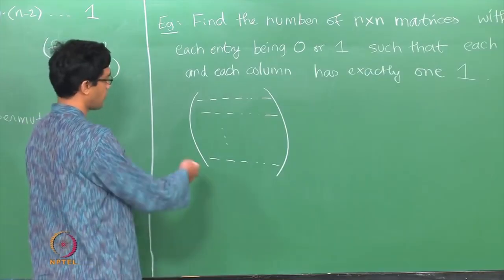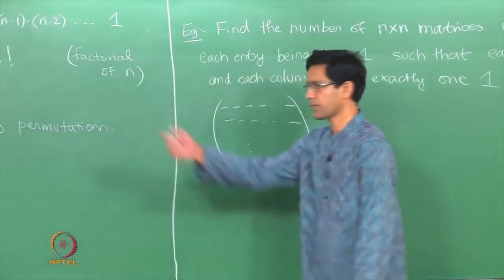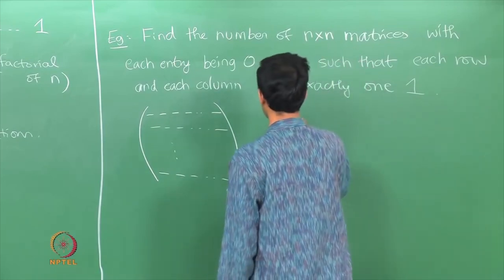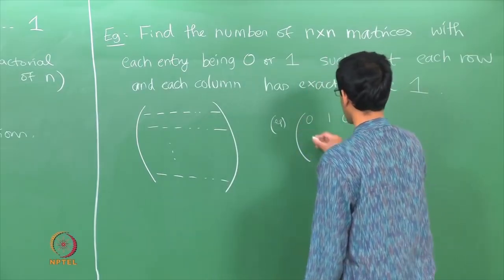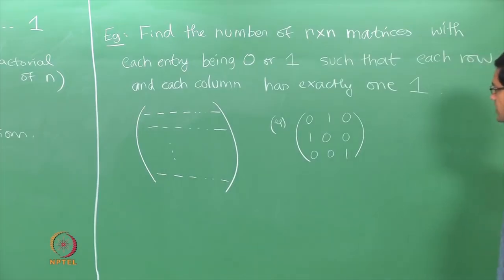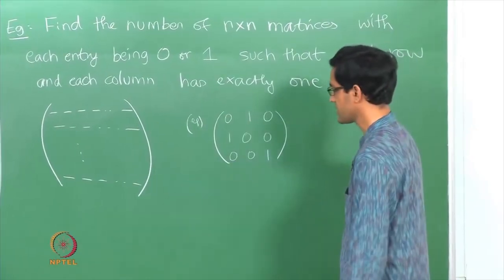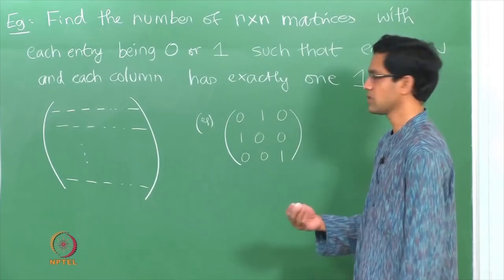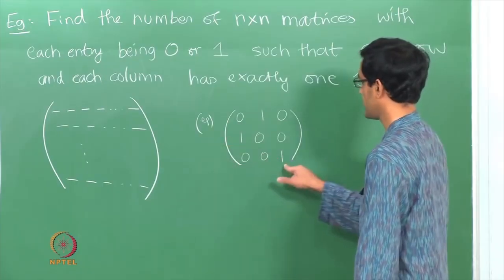In all there are n² positions to fill, but with restrictions: only 0s or 1s, and the sum of each row and column is 1 — meaning in every row there is a single 1 occurring somewhere, and in every column a single 1. To solve this, consider an example for n=3: you could put a 1 in the second place of the first row, a 1 somewhere in the second row, and a 1 somewhere in the third row. What we can do is note down, in each row, the column number in which the 1 occurs.